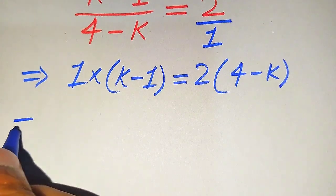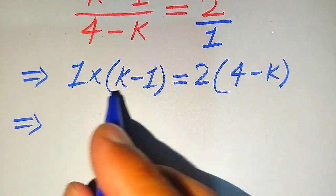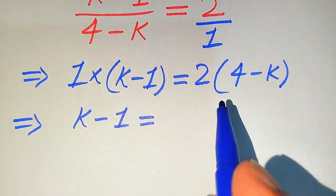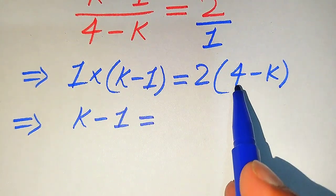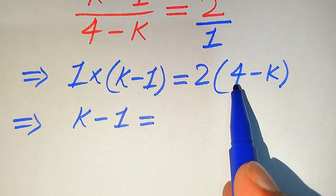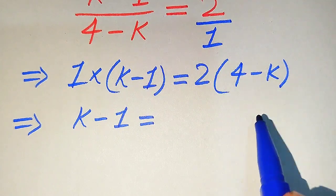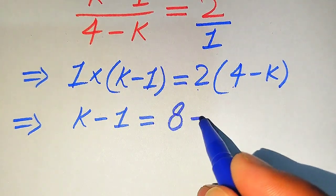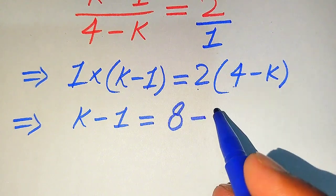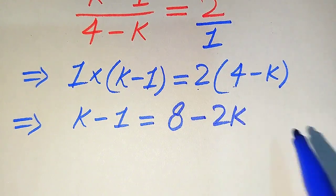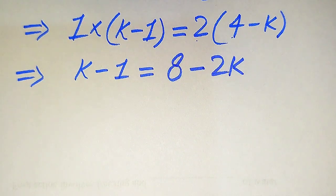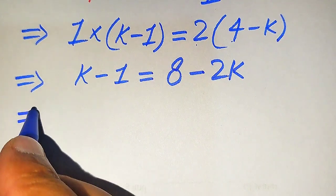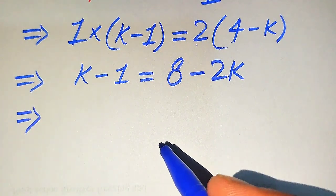In the next step, 1 times (k-1) equals 2 times (4-k). We multiply 2 separately on both values: 2 times 4 becomes 8, minus 2 times k becomes 2k. So we have k-1 = 8-2k. Our target is to find the values of k, so we need to move the variable terms to the left-hand side.